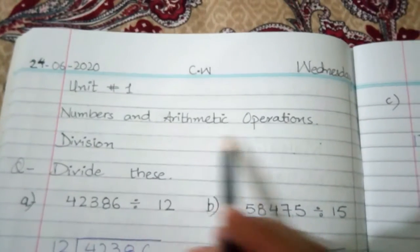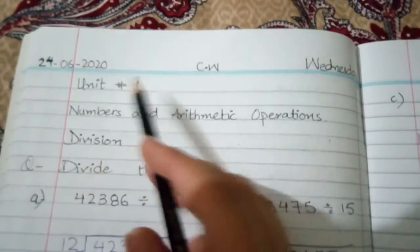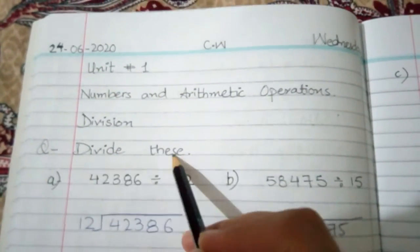Unit number one: Numbers and Arithmetic Operations. Then Division. Prepare the page. The question is: divide these.